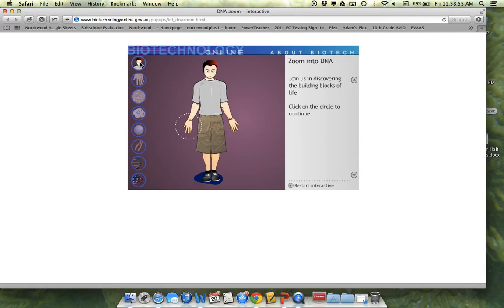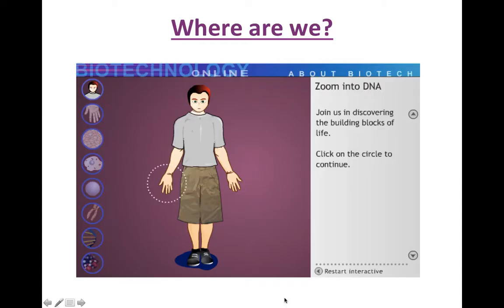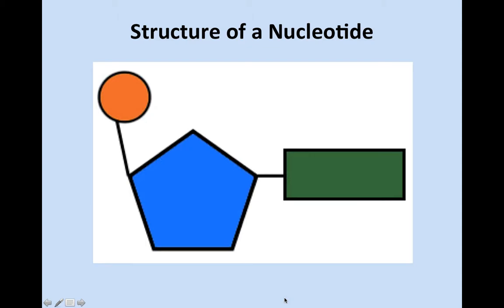Nucleic acids are made of monomers. In your notes, circle the word 'nucleotide' and draw an arrow off to the side, then write the word 'monomer.' The nucleotide is the monomer of DNA, which is a nucleic acid.